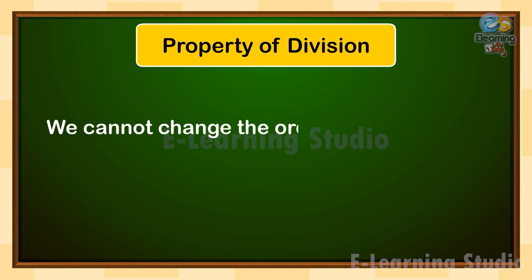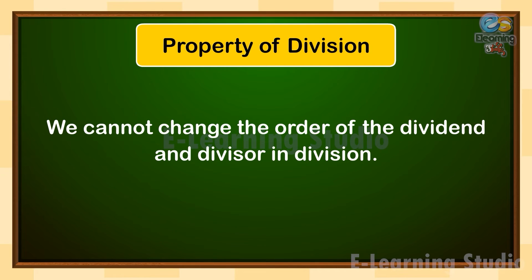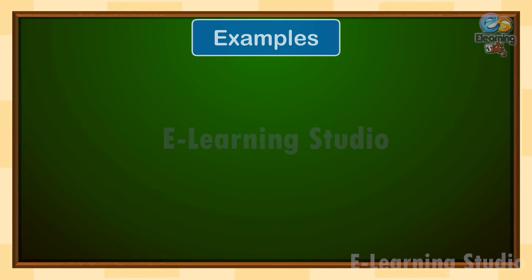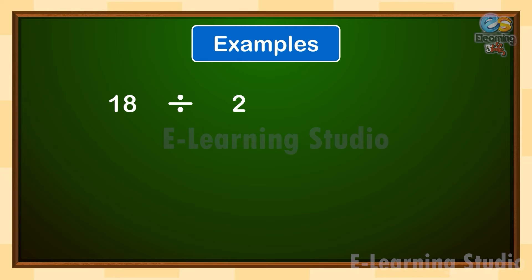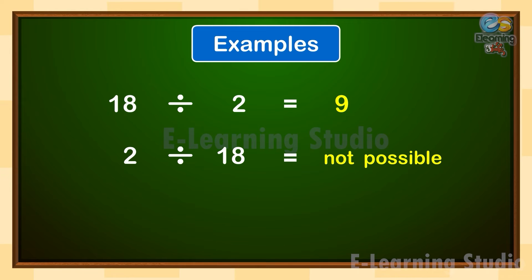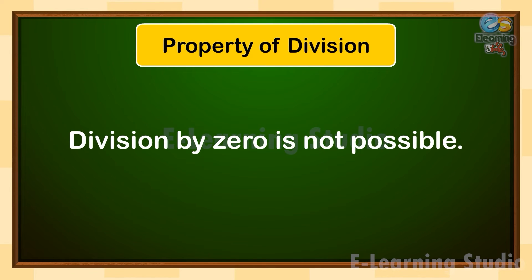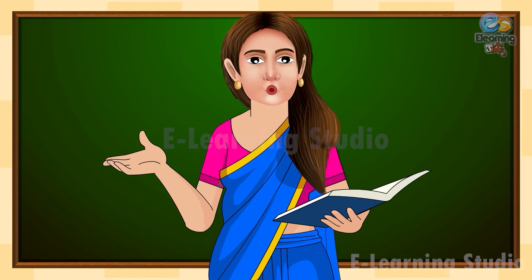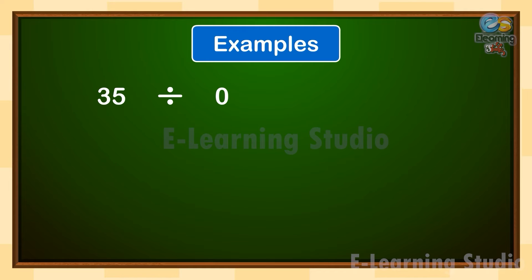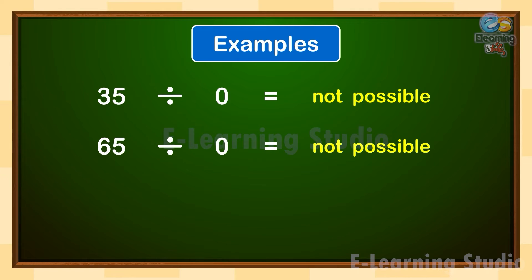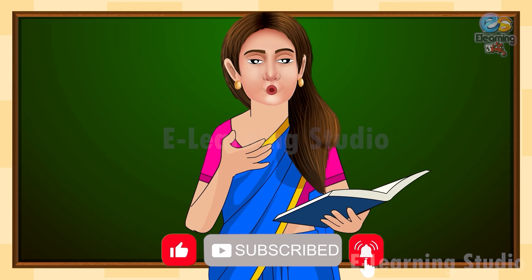We cannot change the order of the dividend and divisor in division. Let us understand with the help of some examples. Remember, the divisor can never be 0. Hope this is clear to all. Thank you and happy learning.